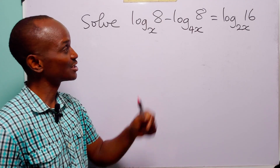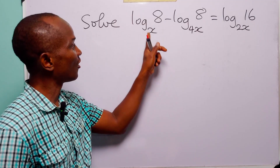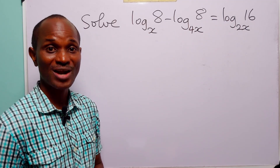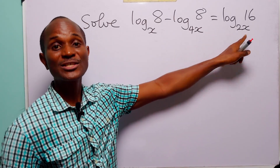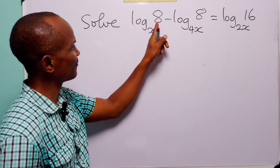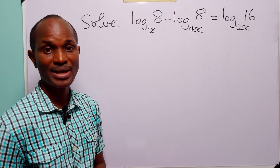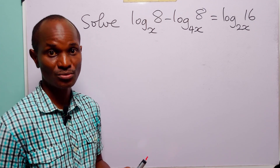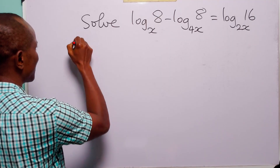Hello and welcome. To solve this logarithmic equation, we are going to start by changing the base of these three log terms. This is going to help us extract x — the unknown — from the base. Notice that we have 8, 4, 2, and 16, and all these numbers are multiples of 2, so it would be best to work in base 2.